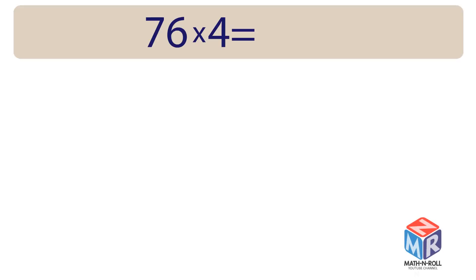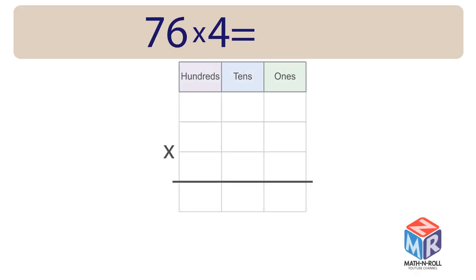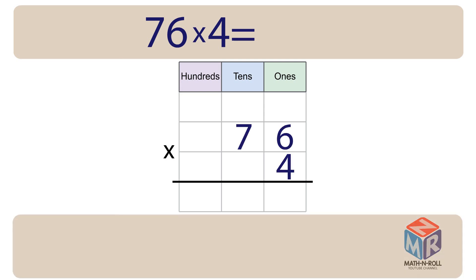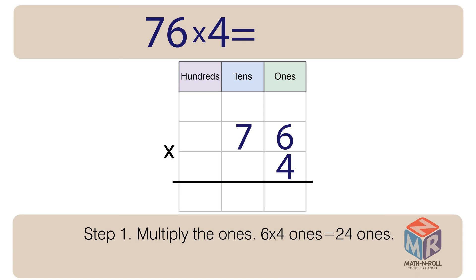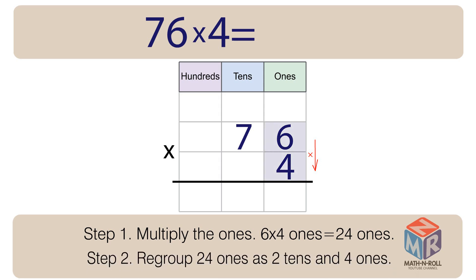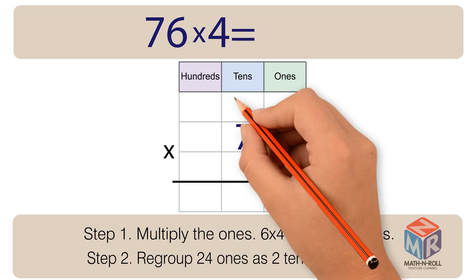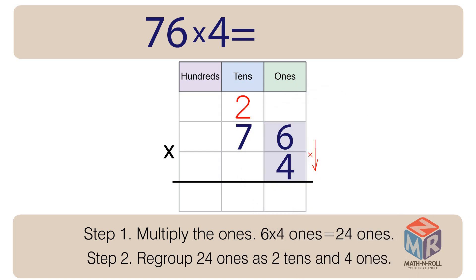Let's try another example. 76 times 4. Step 1: Multiply the ones. 6 times 4 ones is equal to 24 ones. Step 2: Regroup 24 ones as 2 tens and 4 ones.